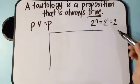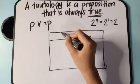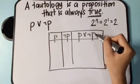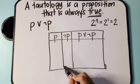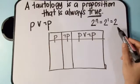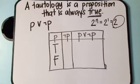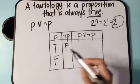If we draw the truth table, we have one column for proposition P, one for the negation of P, and one for the disjunction of P and its negation. The possible truth values of P are true and false. For the negation of P: when we negate true, that becomes false, and when we negate false, that becomes true.